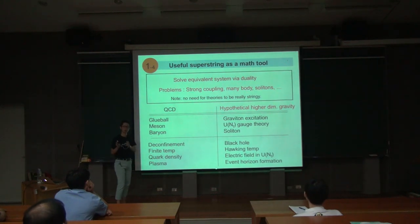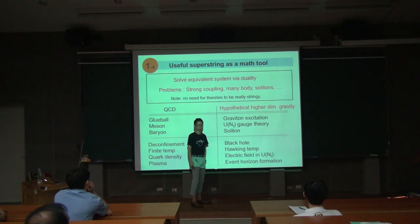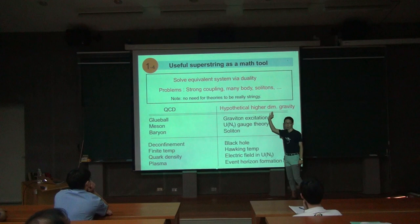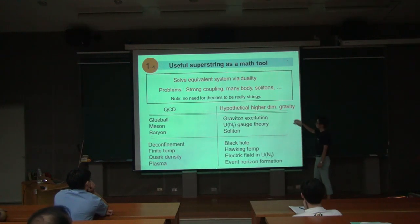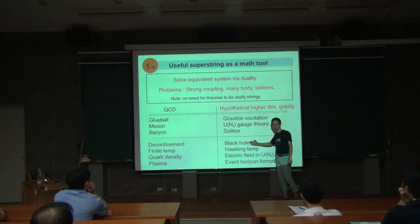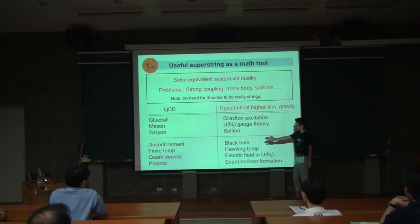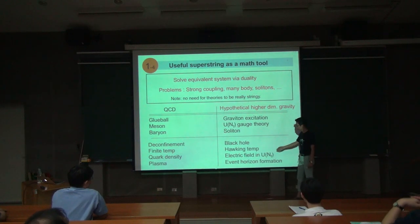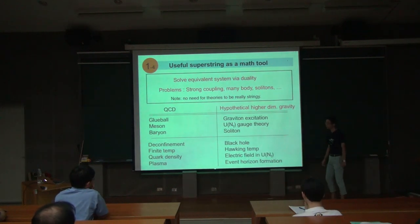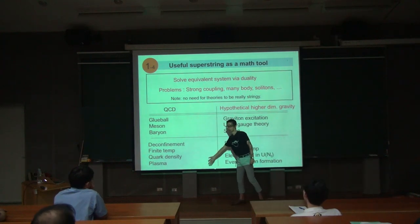Now, if you use string theory technique, which I'll explain later, then all of these physical terms are translated into a hypothetical higher-dimensional gravity theory. For example, the glueball excitation corresponds to graviton excitation in this hypothetical higher-dimensional theory. This is hypothetical, it's not the Einstein theory for our universe. There is a given Lagrangian for this hypothetical theory, weakly coupled, so you can analyze that. Mesons correspond to D-branes. The confinement corresponds to the presence of black hole in this higher-dimensional theory. Higher temperature is Hawking temperature. Quark density is an electric field in this hypothetical gravity theory. And plasma goes to the formation of event horizon.